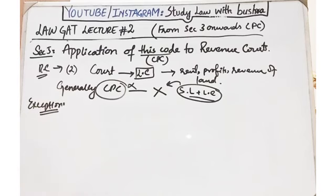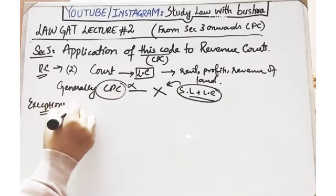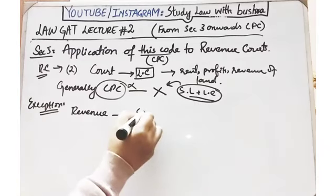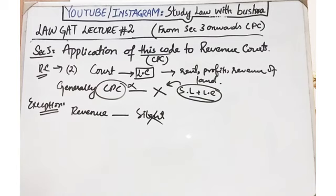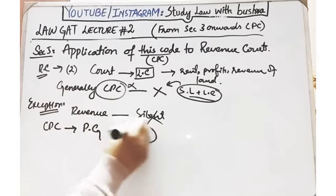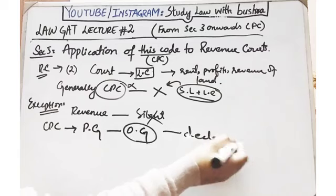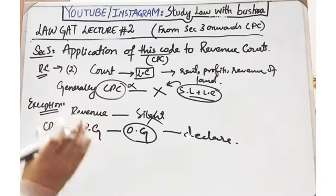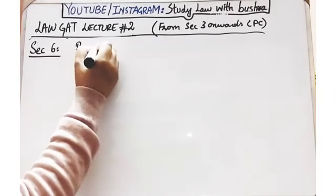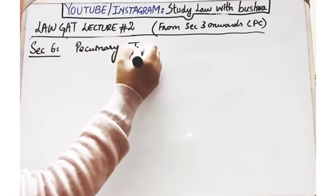लेकिन Section 5 की clause 1 में एक exception दी गई है। जहाँ revenue courts उस code की provisions के according बनाई गई हैं, और कोई special law किसी specific matter पर silent है — उस matter से related कोई provision नहीं दी गई — तो CPC वहाँ applicable होगी, लेकिन सिर्फ तब जब provincial government एक notification के ज़रिए अपने official gazette में यह declare कर दे कि CPC की specific provision revenue courts पर applicable होगी।